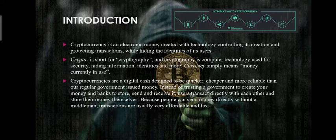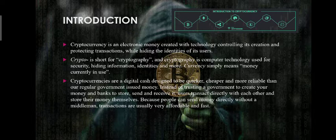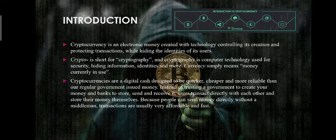Cryptocurrencies are digital cash designed to be quicker, cheaper, and more reliable than our regular government-issued money. Instead of trusting a government to create your money and banks to store, send and receive it, users transact directly with each other and store their money themselves. Because people can send money directly without a middleman, transactions are usually very affordable and fast.